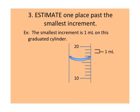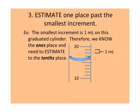Rule number three: estimate one decimal place past the smallest increment that you can see. So for example, the smallest increment is one milliliter on this graduated cylinder. Therefore, we know the ones place, and we need to estimate to the tenths place.